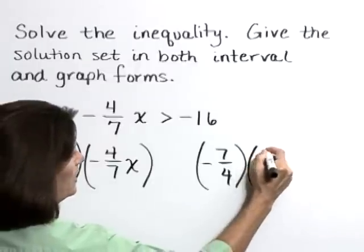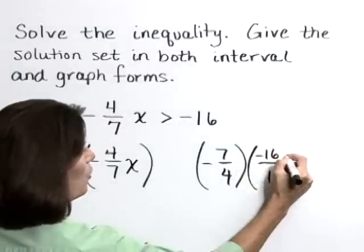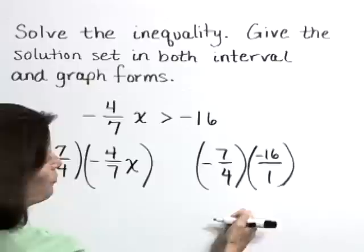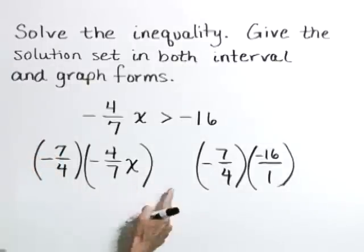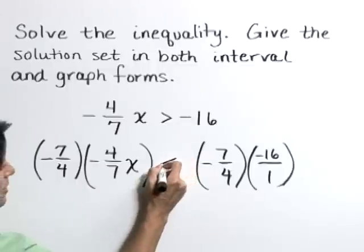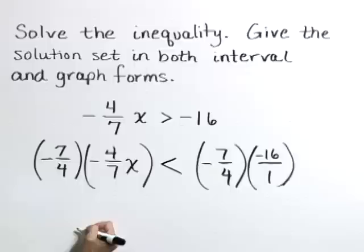I'm going to write that negative 16 as negative 16 over 1, so I can clearly see the numerator and denominator values. And when we multiply both sides by a negative quantity, we need to remember to switch the direction of that inequality symbol.